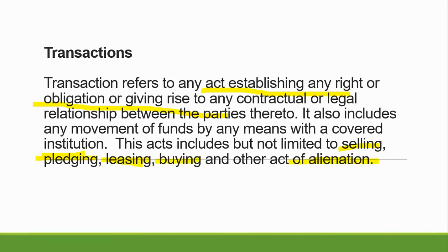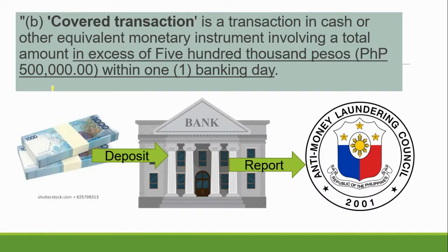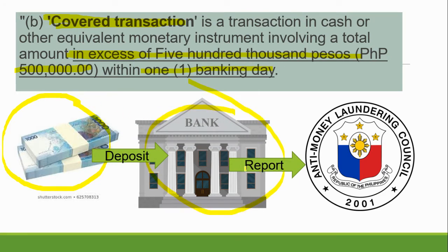Other predicate crimes include piracy, qualified theft, swindling or estafa, and smuggling — there is money involved in all of these. Now, 'transaction' refers to any act establishing any right or obligation, giving rise to any contract or legal relationship. This includes: buying, selling, pledging (like prenda), leasing, and other acts of alienation. Going to a casino, money transfer — those are transactions.